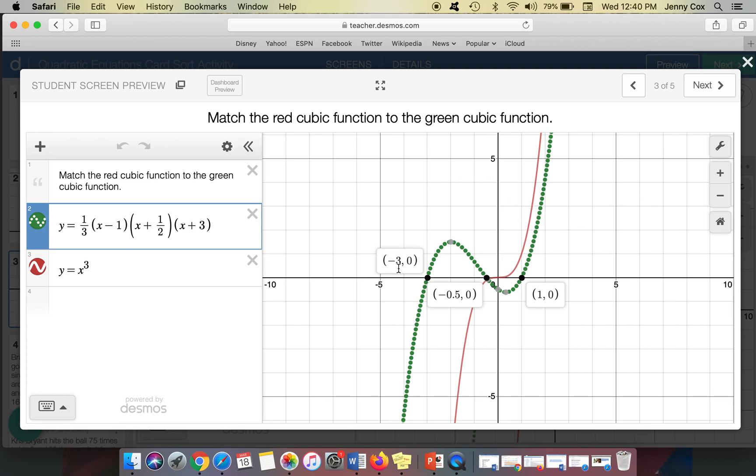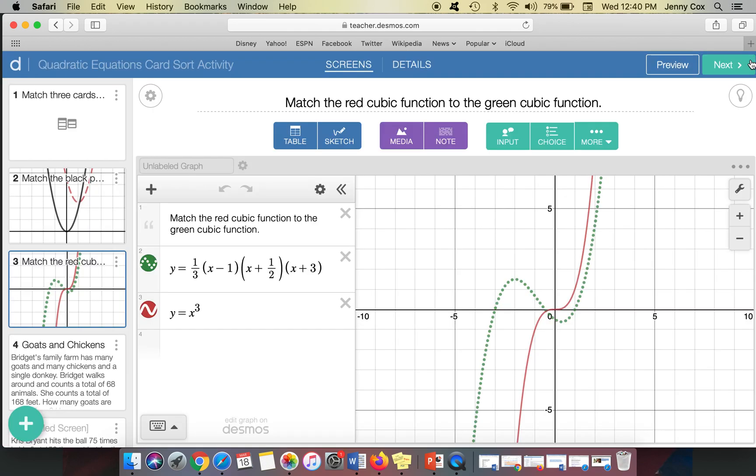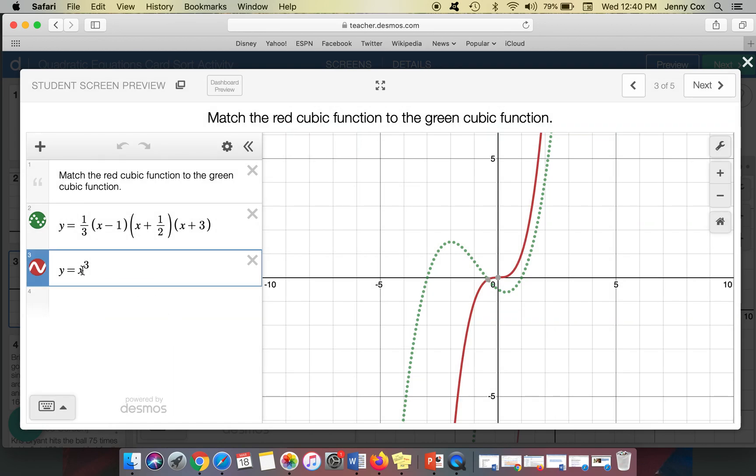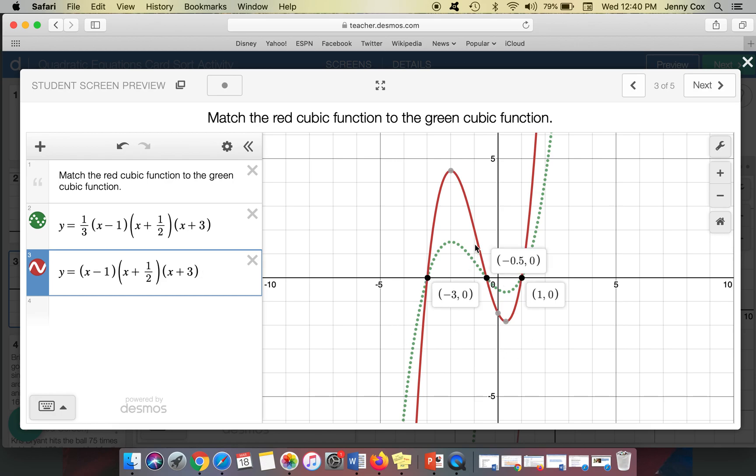And so they see, they have zeros at -3, -1/2 and 1. So they might have a general idea that they need to adjust this to (x minus 1)(x plus 1/2)(x plus 3). And I see, oh, I almost have it. I can see that I go through these points, but I need to be able to figure out how I'm scaling this.